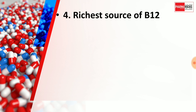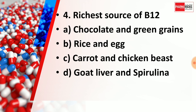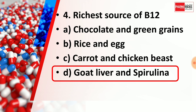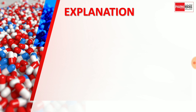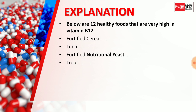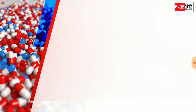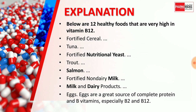Question number 4: The richest source of Vitamin B12 is — Option A: chocolate and green grains, Option B: rice and egg, Option C: carrot and chicken breast, Option D: goat liver and spirulina. The right answer is Option D, goat liver and spirulina. The 12 healthy foods very high in Vitamin B12 include fortified cereal, tuna, fortified nutritional yeast, salmon, fortified non-dairy milk, milk and dairy products, and eggs — which are a great source of complete protein and B vitamins, especially B2 and B12.